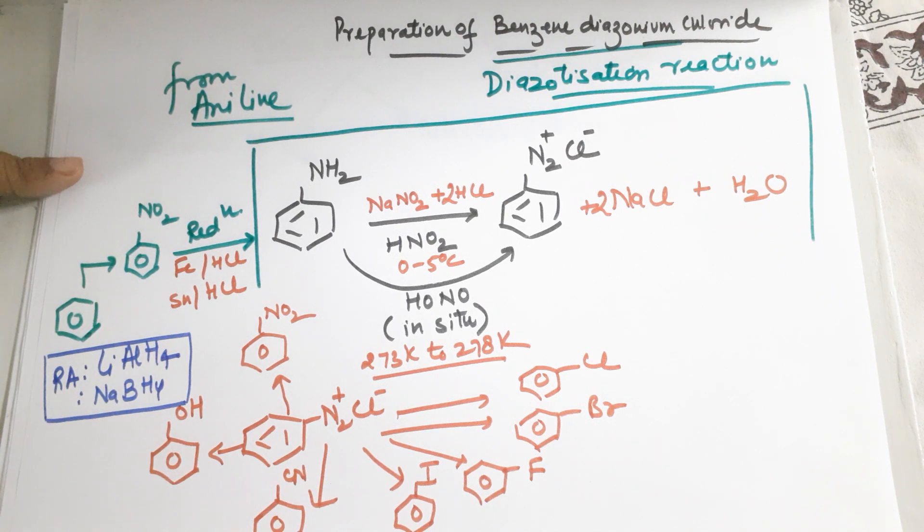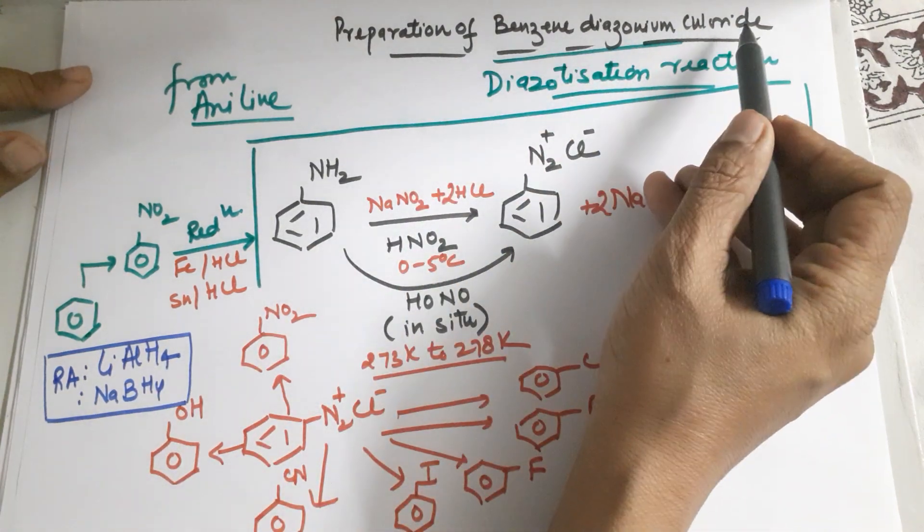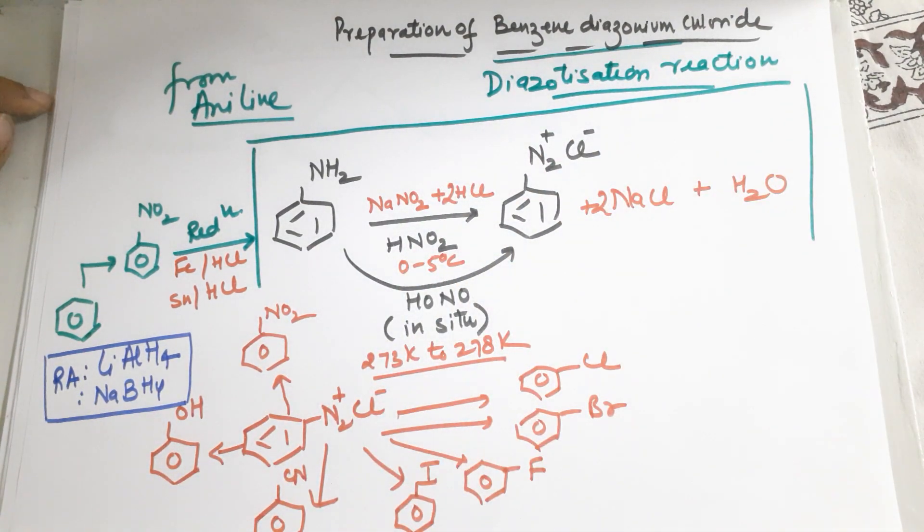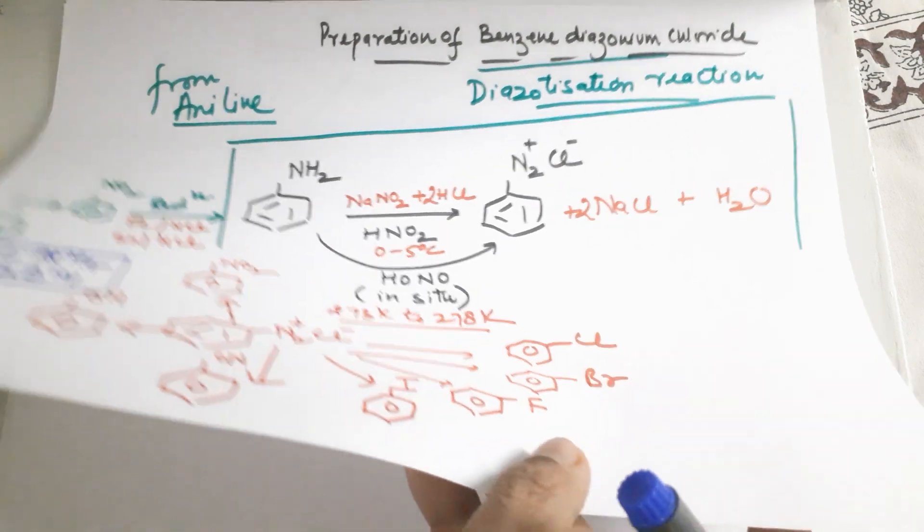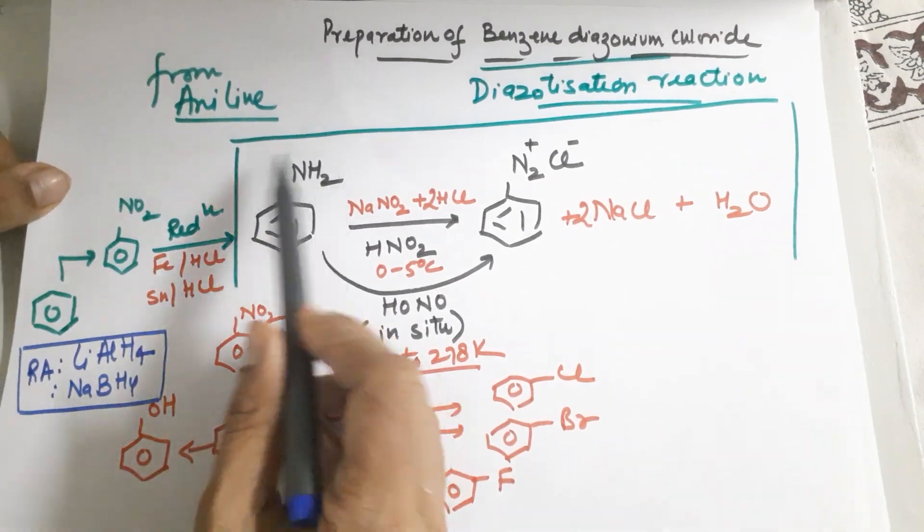But as I said, if preparation of benzene diazonium salt is asked, you only have to do this: take it from aniline and prepare the diazonium salt.